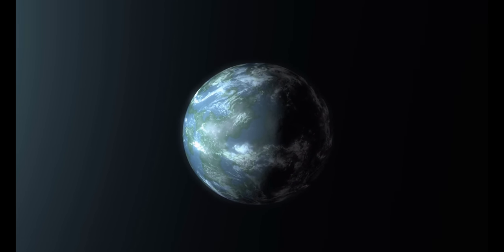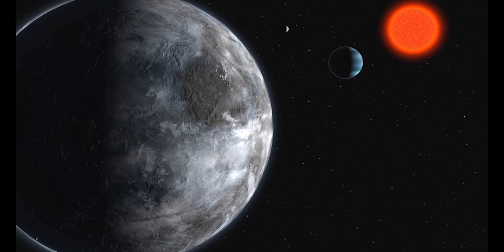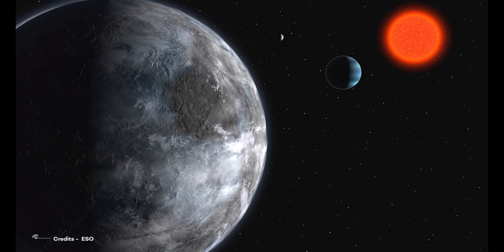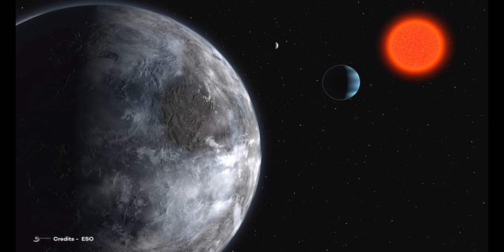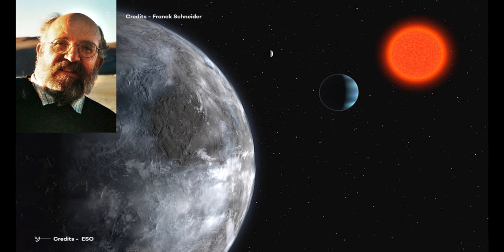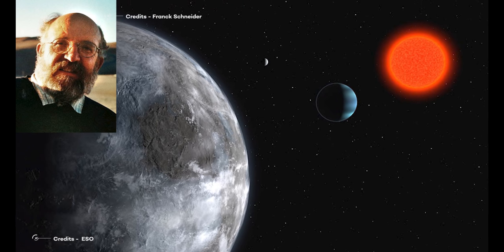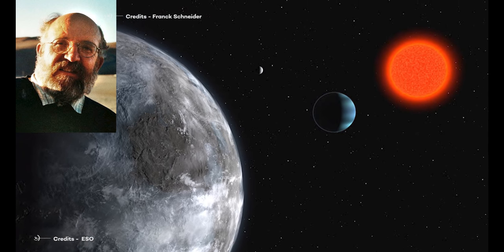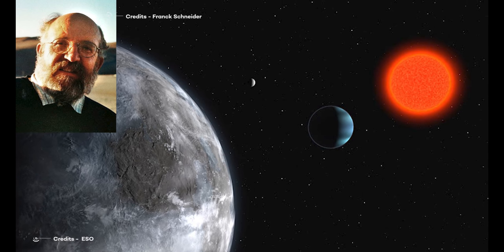We are confident that, given the results obtained so far, finding a planet with the mass of the Earth around a red dwarf is within reach, says Michael Mayer, who discovered the first exoplanet orbiting a star similar to the Sun, and was awarded the Nobel Prize in Physics in 2019.